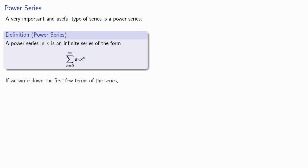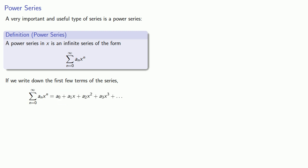If we write down the first few terms of such a series we see that our terms look like a_0 plus a_1 x plus a_2 x squared plus a_3 x cubed and so on. A power series appears to be a polynomial, but it isn't because a polynomial has a last term and since this is an infinite series there is no last term. What makes the power series useful is that the partial sums are polynomials, and if the series converges the partial sums approximate the series itself, giving us a polynomial approximating an infinite sum.